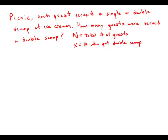So I created these two variables: N to be the total number of guests and x to be the number who got a double scoop. So x is what the question is actually looking for, but we suspect that N is going to be helpful in answering this question as well.